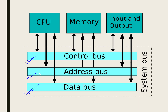The CPU uses the address bus to carry the memory location address. The address bus is one-way — it carries the memory location for read or write conditions.